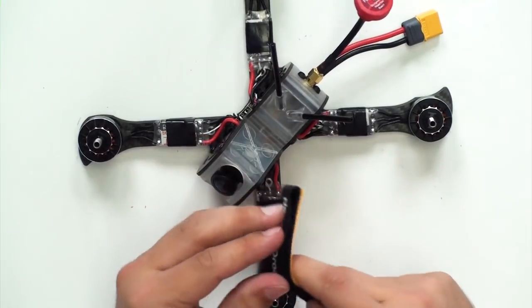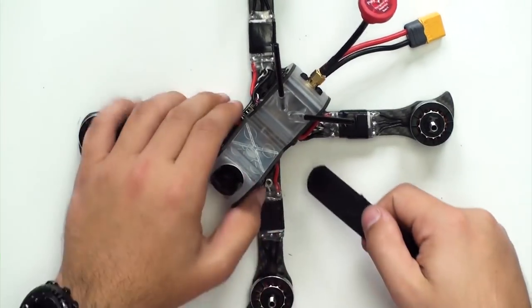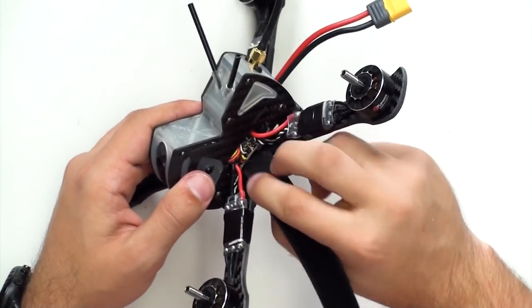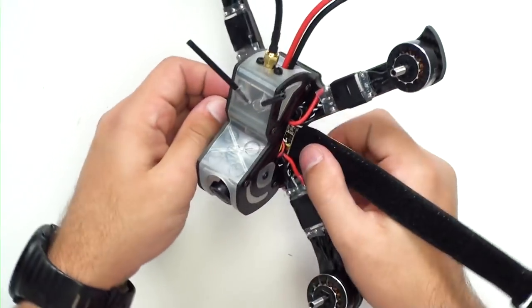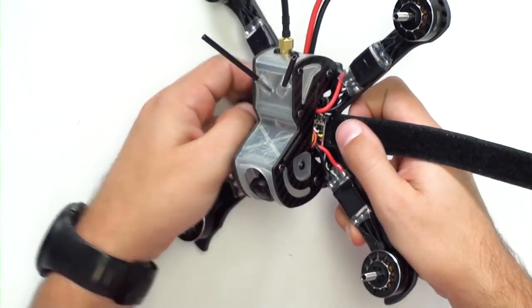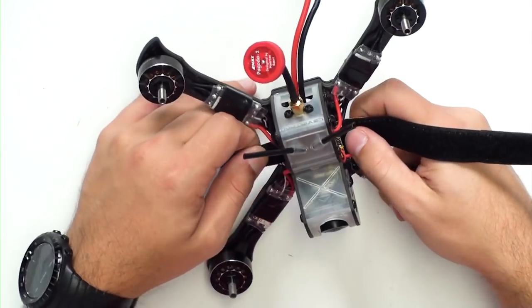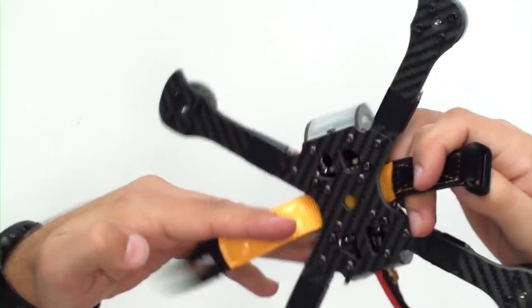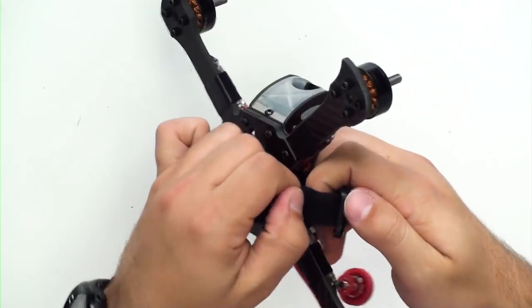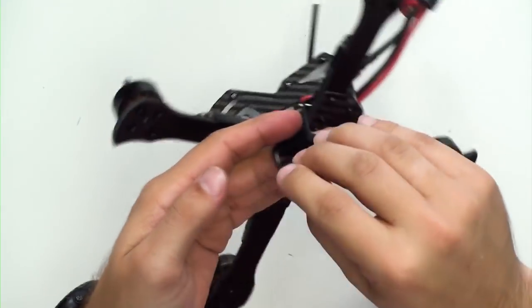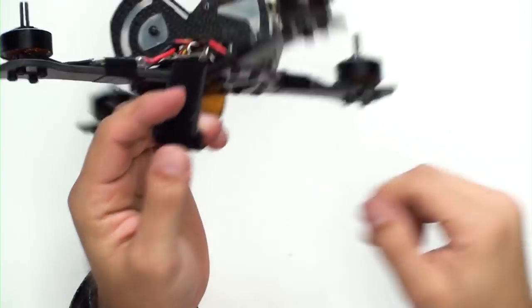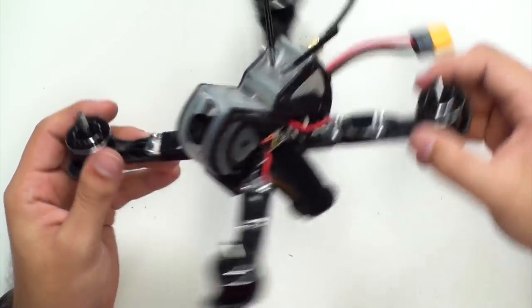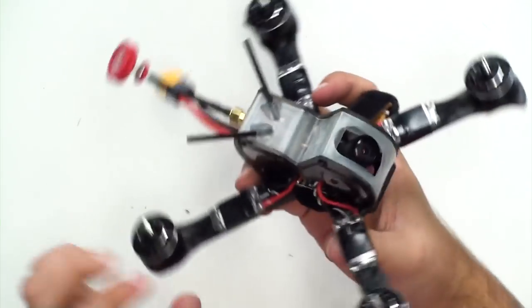Last step we're going to do is install a NewbyDrone lipo strap. Run that under the flight controller. And there you go. We have one built Leviathan.